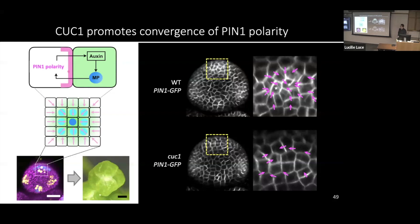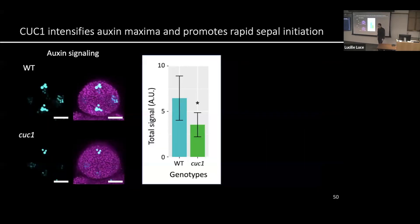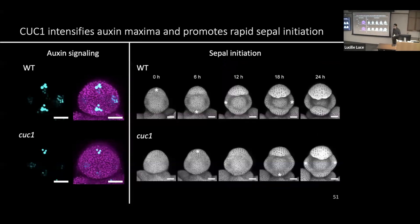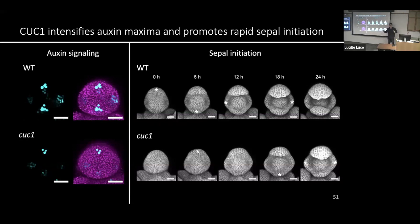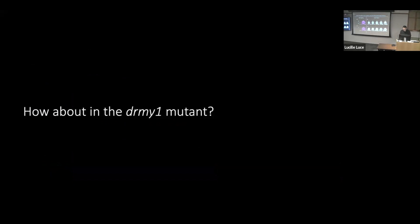CAC1 promotes convergence of PIN polarity, so auxin maxima are stronger in wild-type compared with the cac1 single mutant. Because auxin is so important for organ development, in wild-type the sepals emerge from the floral meristem faster compared with a cac1 mutant bud of similar stage. So the function of CAC1 in wild-type is to increase polar auxin transport and increase the intensity of auxin maxima, helping the rapid initiation of sepals from the floral meristem — which is crucial because sepals function to protect the floral meristem, so faster sepal emergence provides better protection.